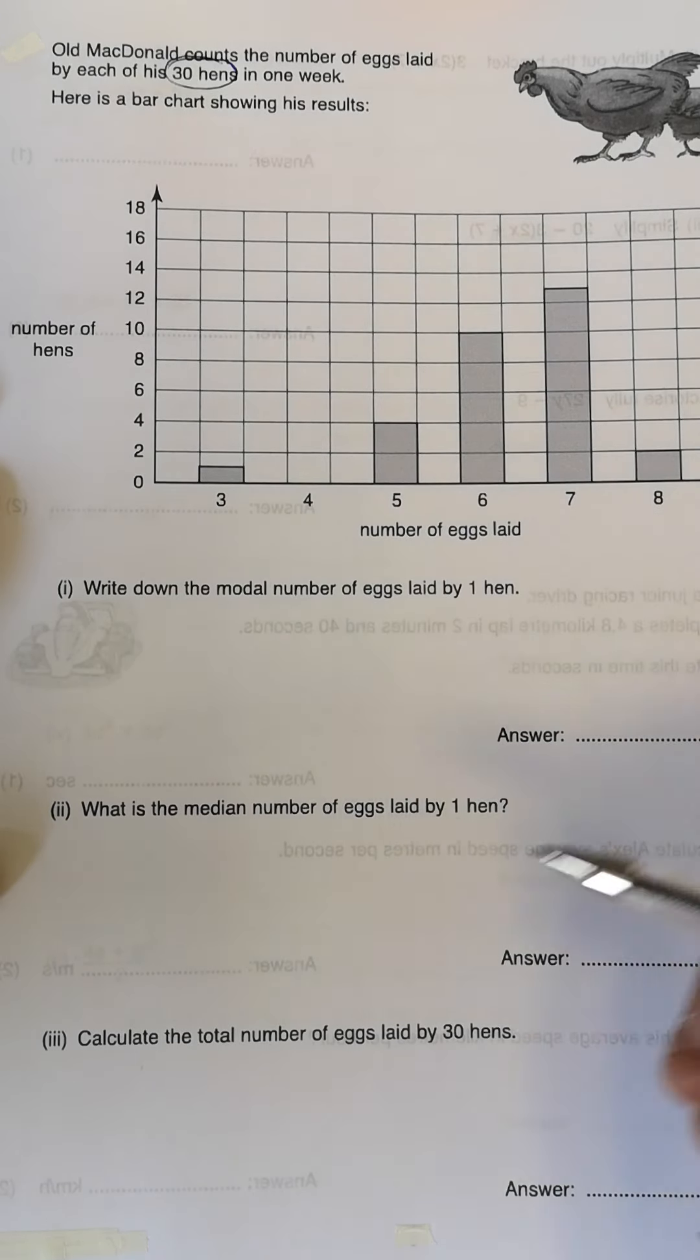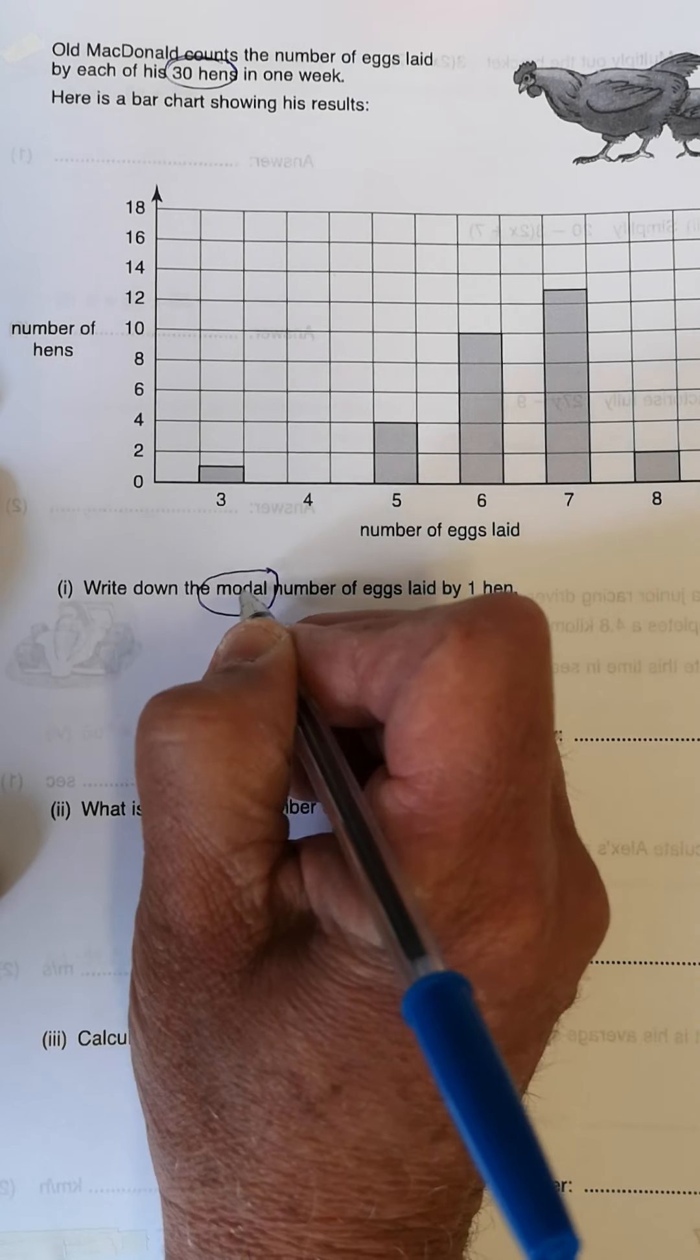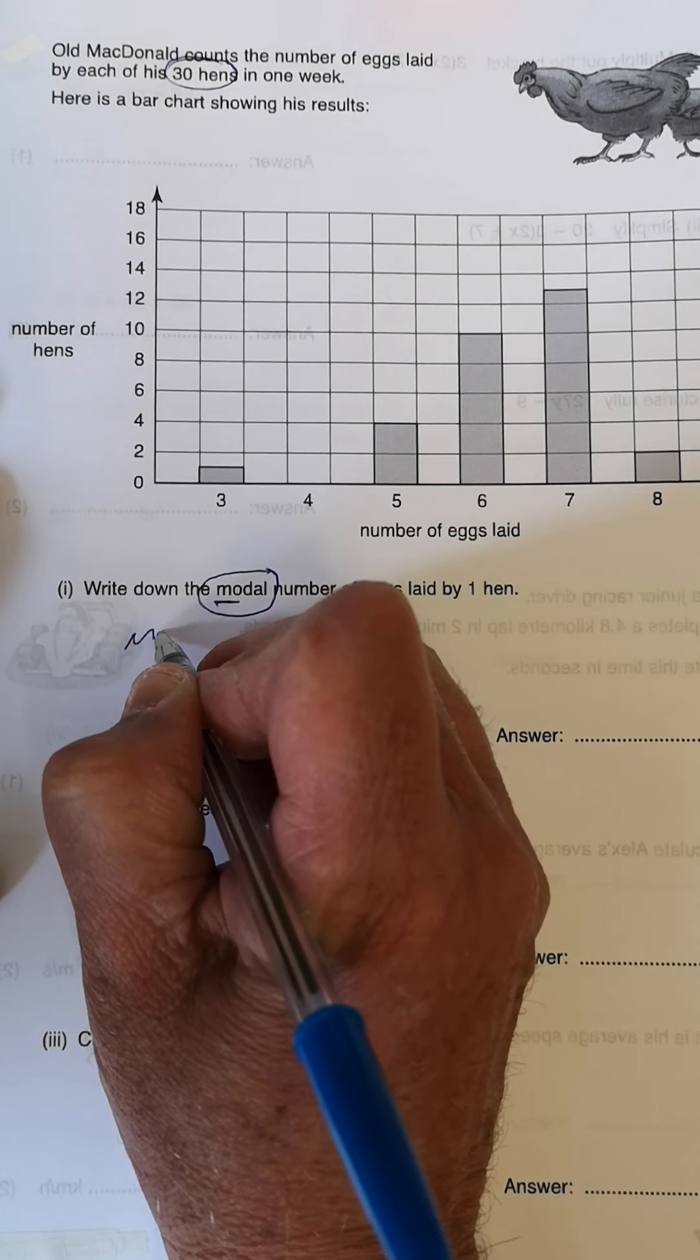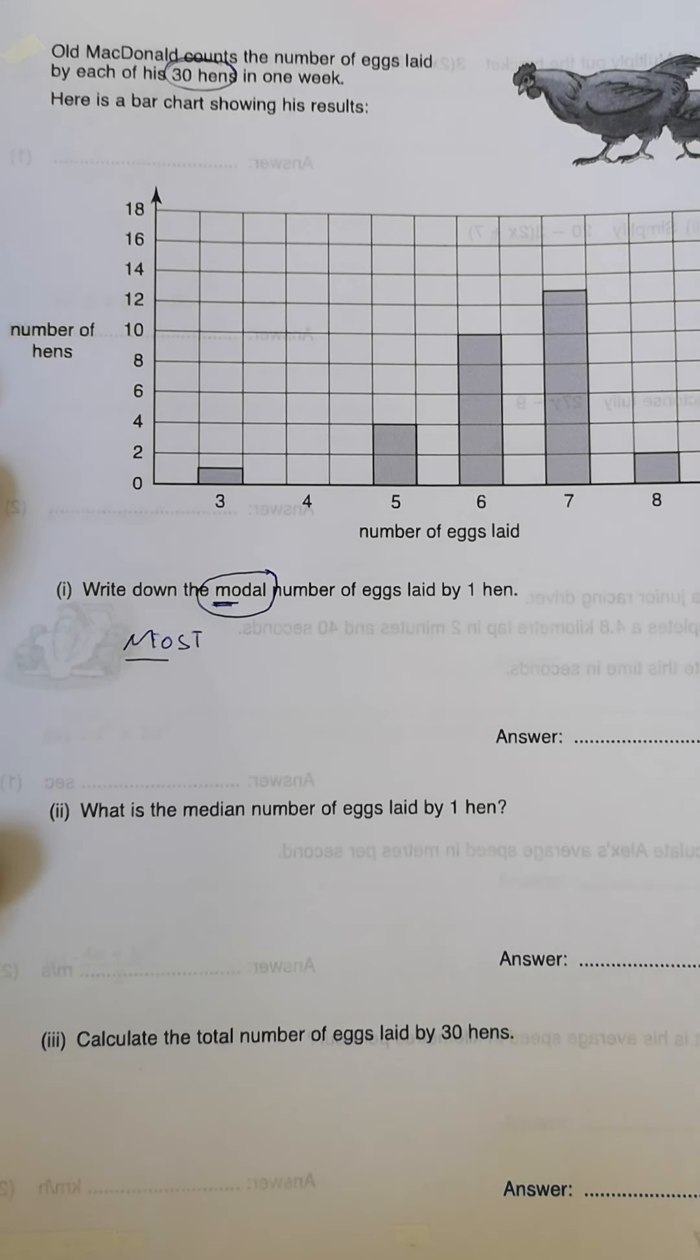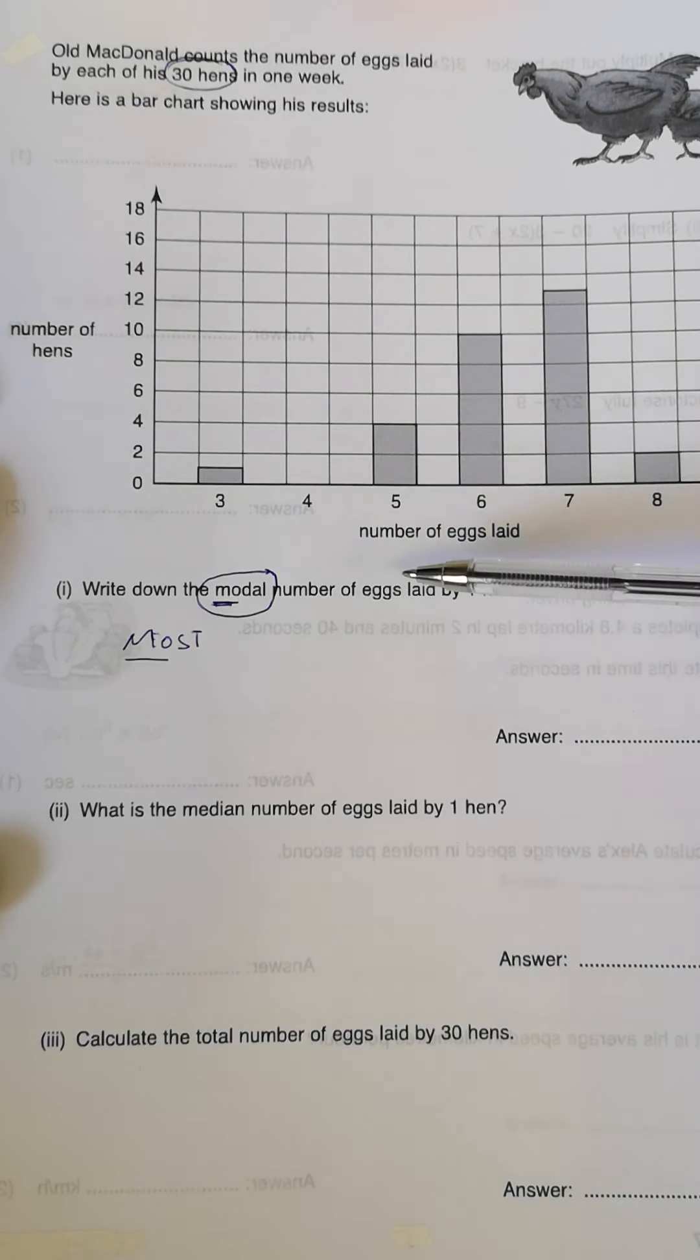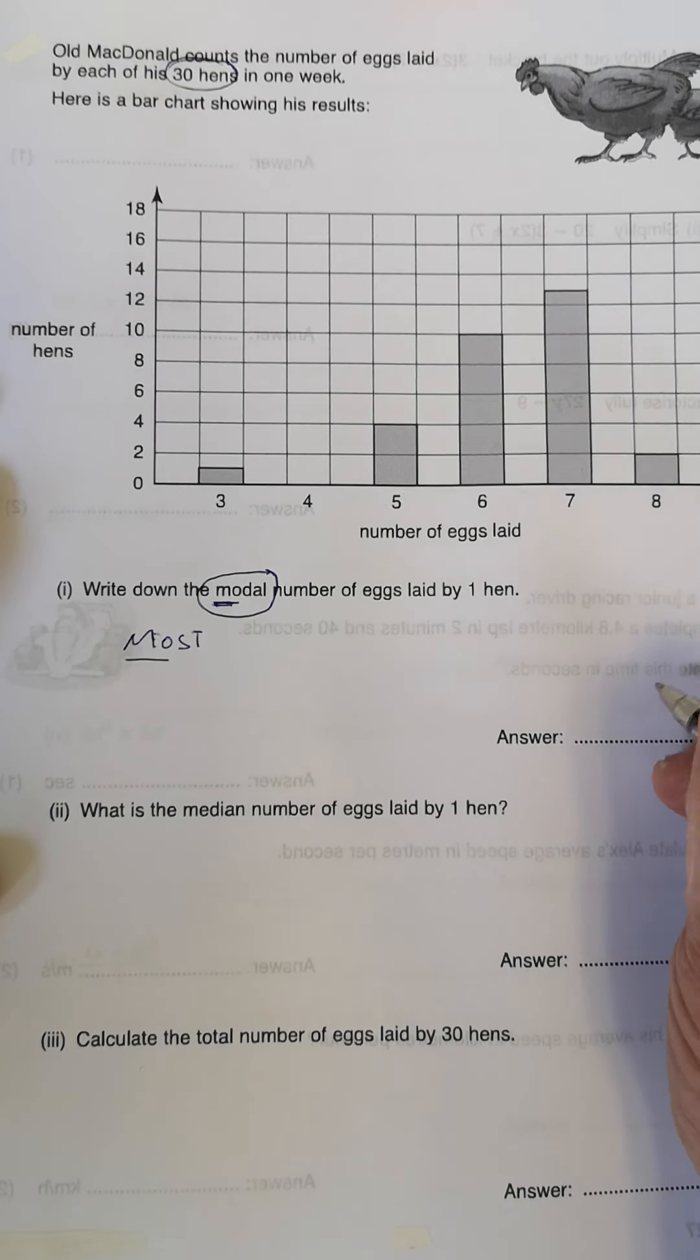Now write down the modal. Let's look at this. Modal. What does modal mean? There's a clue. M-O. I'll write this word for you. The word most. M-O for modal. Modal just means which one appears the most. Write down the modal number of eggs laid by one hen. And the modal number in this case, the most amount of eggs laid by a hen is seven.